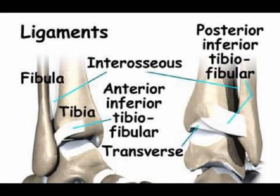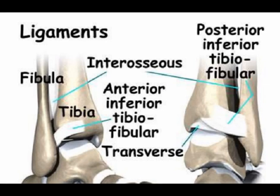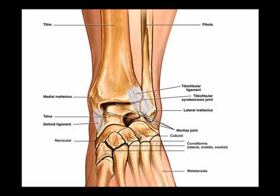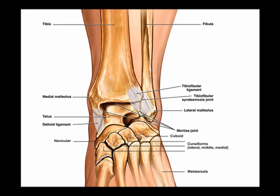A high ankle sprain most commonly occurs in sports such as football, soccer, lacrosse, basketball, hockey, skiing, hiking, and trail running. High ankle sprains usually occur when the athlete pivots suddenly to the inside with the foot planted on the playing surface. An excessive amount of external rotation force on the fibula bone with respect to the tibia pulls the bones apart, resulting in a ligament injury.